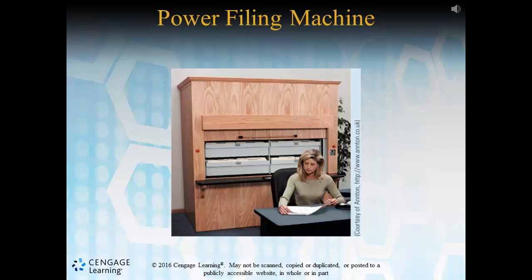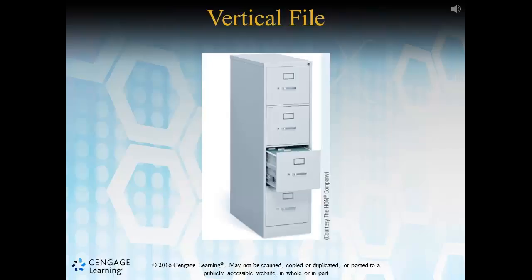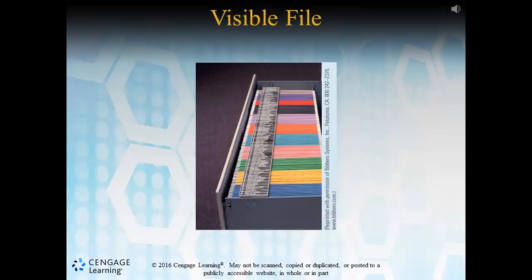A vertical file looks exactly like a filing cabinet. They have locking mechanisms and can sometimes be stacked very high. The visible file is a system that allows a user to view a drawer's contents in an easy manner. With all of these in mind, it's important to note that different types of equipment require various types of folders.